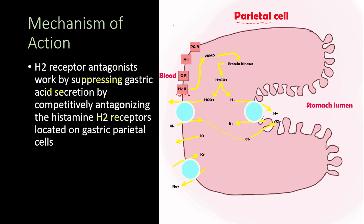After a meal, when food reaches the stomach, it activates the stretch receptors in the stomach, leading to an increase in gastrin secretion from the stomach G cells. The gastrin then works on the enterochromaffin cells in the stomach to increase the secretion of histamine. The histamine works on the H2 receptors on the parietal cell, leading to an increase in cyclic AMP, which activates protein kinases, leading to the breakdown of H2CO3 into bicarbonate and a hydrogen ion.